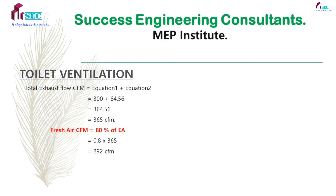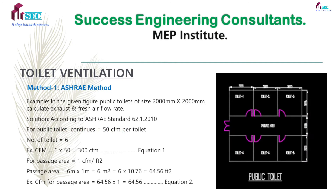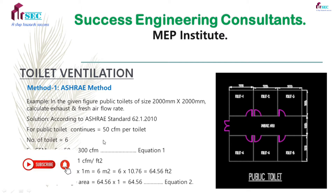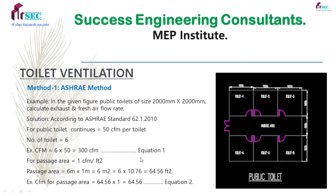Let us see the first method: the ASHRAE method. Example — in this figure, public toilet size is 2 meter by 2 meter. Calculate the exhaust and fresh air flow rate. According to ASHRAE 62.1-2010, for public toilet with continuous fan running, 50 CFM is valid. Number of cubicles is 6 — you can see here: one, two, three, four, five, six — total is six. So exhaust flow CFM is 6 into 50, which is 300 CFM.